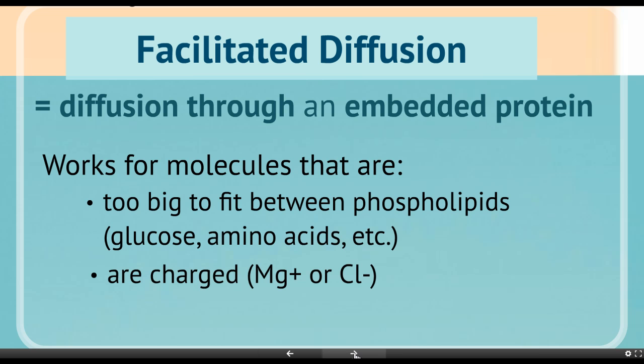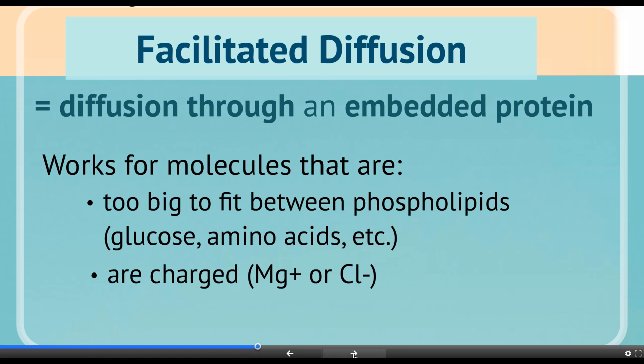But when those charged molecules move down by the tails, they're going to get pushed back, because those tails are non-polar and they don't want to interact with anything that has a charge. So the embedded proteins are going to create a safe passage for charged molecules or ions to move through the cell membrane.